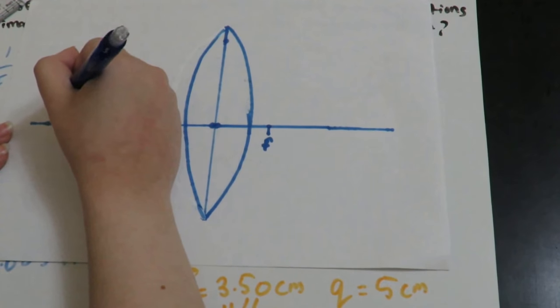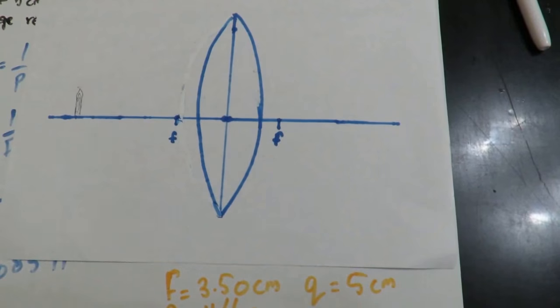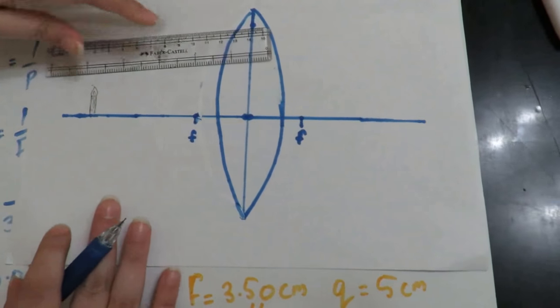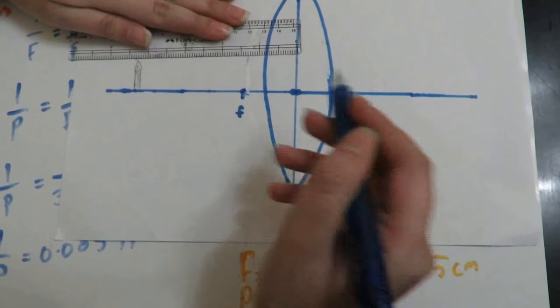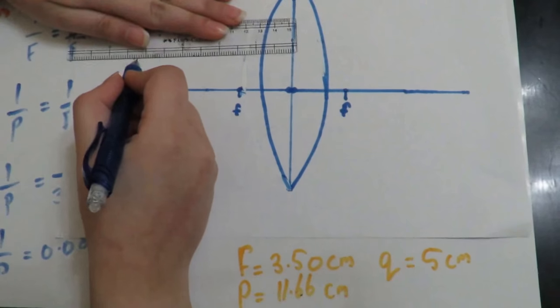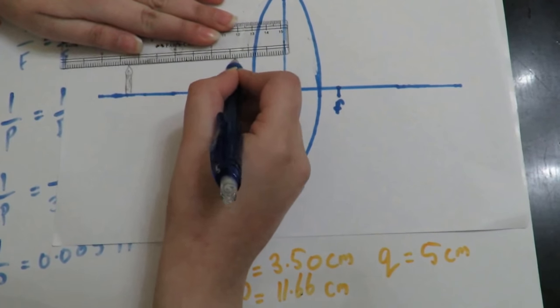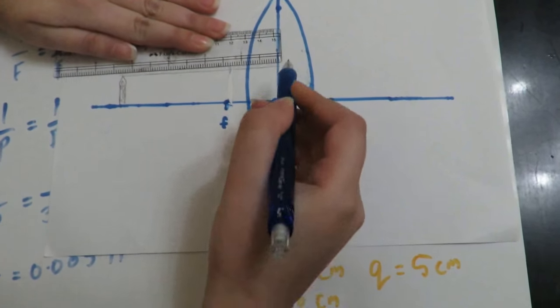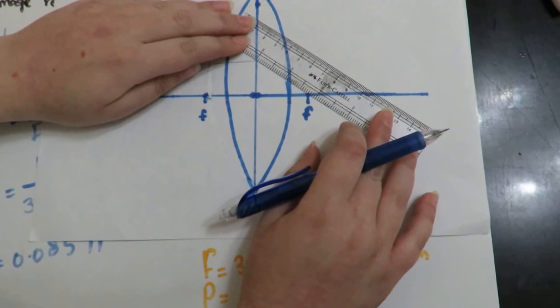So we will start drawing the rays. The first ray is parallel. It is called parallel because it is parallel to the principal axis, which is this. And then it will pass through the focal point.